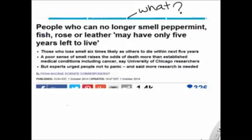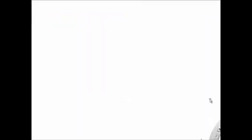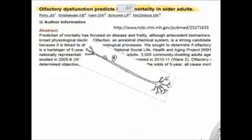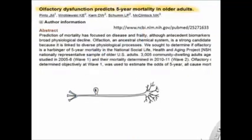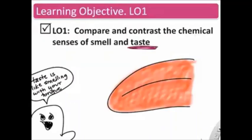Research shows olfactory dysfunction predicts five-year mortality in older adults. Since your sense of smell depends on neurons and brain function, losing it likely indicates other parts of the nervous system aren't working well. Taste is also a chemical sense: chemicals from food are released into saliva and diffuse across the tongue, where taste buds — clusters of taste cells and helper cells — detect them.